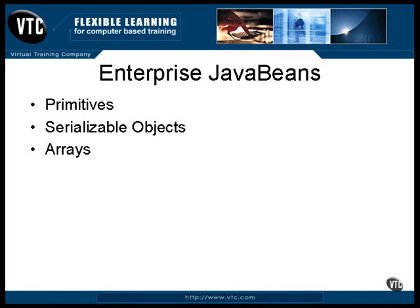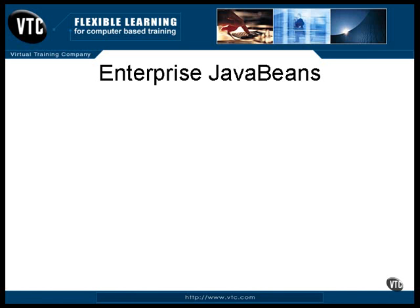You can send arrays as long as the members of the arrays all can be sent. Remote objects are addressed by stubs that reference them, so sending the stub is sort of like sending a gateway to the remote object — the object stays where it is and remains remote, and the access to it is sent. Those are the fundamentals of clients talking to beans. In the next movie, we'll be looking closer at the beans themselves.